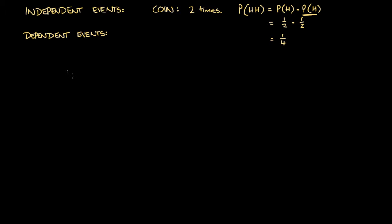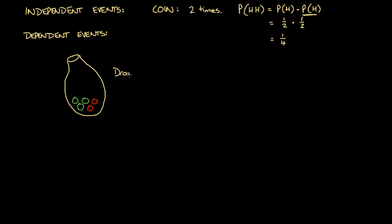Imagine you go into a casino and there's a man with a bag. Inside the bag there are five different balls — three green balls and two red balls. The game is that anyone who wants to play reaches their hand into the bag and without looking draws two balls. If you get two green balls, you win a prize.